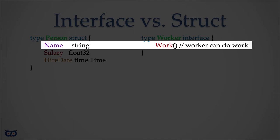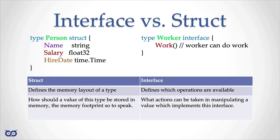You cannot put functions inside of structs in Go, and you cannot put fields inside of interfaces — the two things are distinct. A structure defines the memory layout of a type — the memory footprint, how much memory is needed to store all the fields. An interface defines what operations are available. Now let's look at some code to see how we define or declare interfaces.